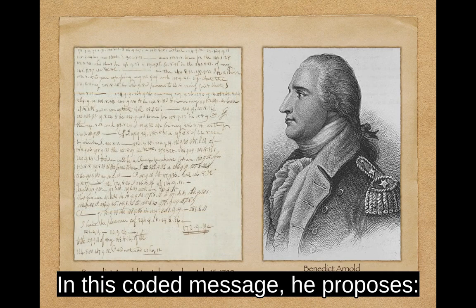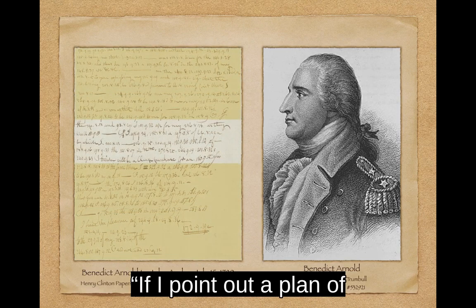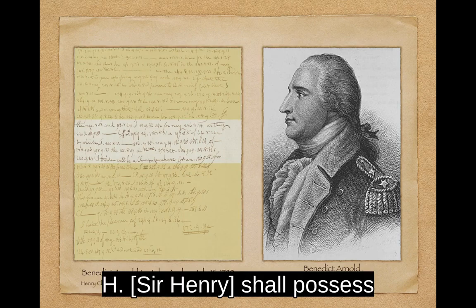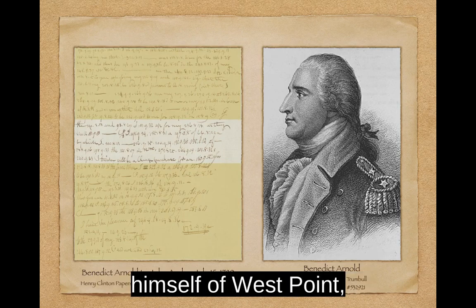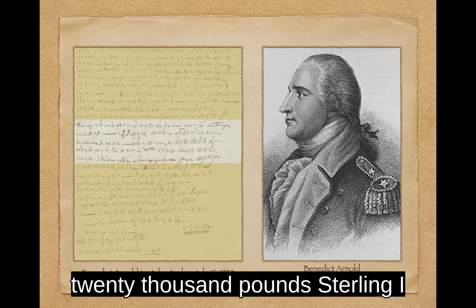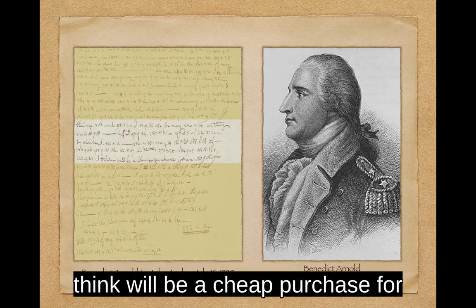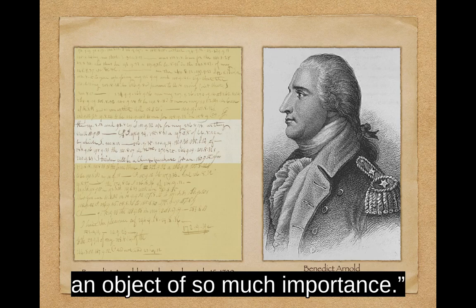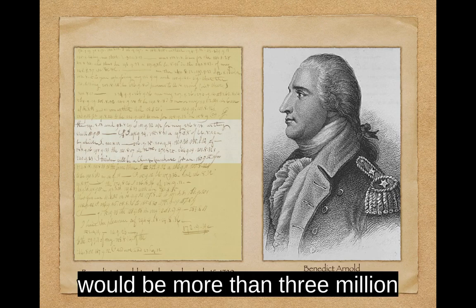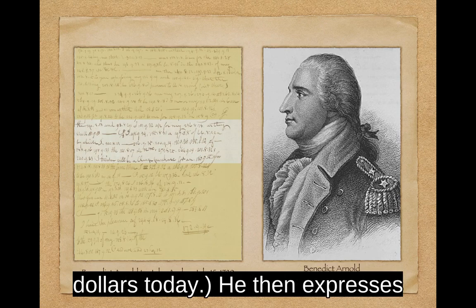For a price. In this coded message, he proposes: 'If I point out a plan of cooperation by which Sir Henry shall possess himself of West Point, the garrison, etc., 20,000 pounds sterling, I think, will be a cheap purchase for an object of so much importance.' 20,000 pounds sterling would be more than $3 million today.